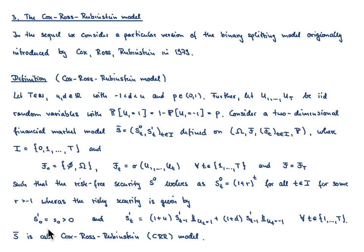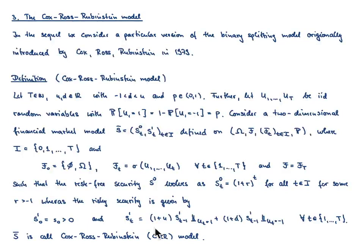The evolution of the risky security is described as follows. Its initial value equals S_0, which should be strictly positive. Then S1 of T is recursively defined: either this process jumps up to the value (1 + U) times the value at time T minus 1, in case that U_T equals plus 1, or this process at time T jumps down to the value (1 + D) times S1(T − 1), in case that U_T equals minus 1.